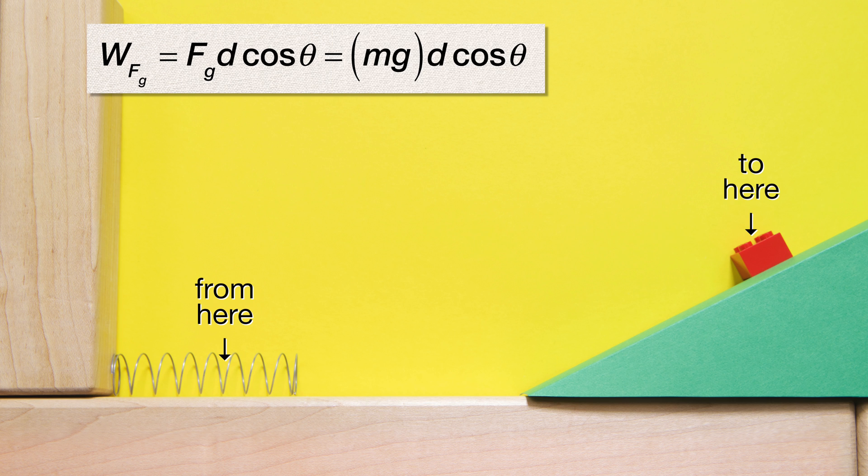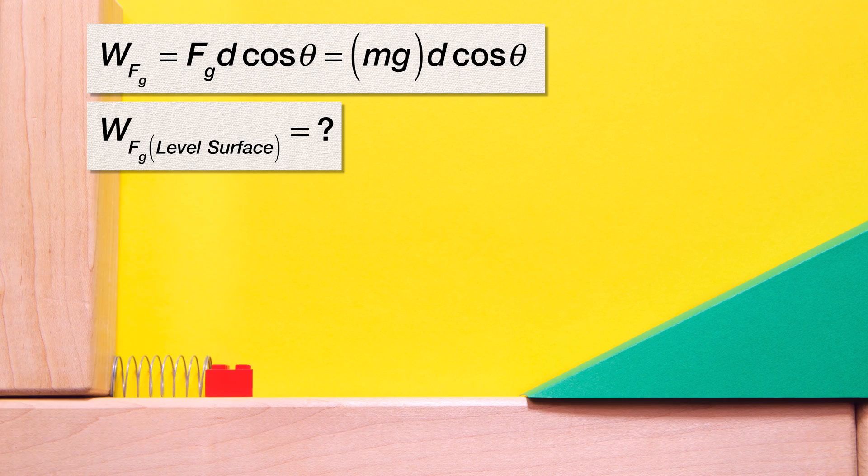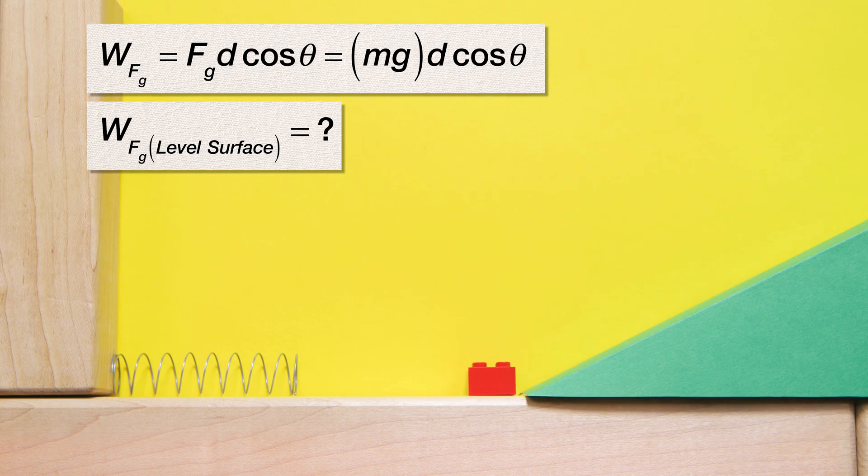The force of gravity equals mass times the acceleration due to gravity, so we can substitute that in for the force of gravity. The angle between the force of gravity and the displacement of the block is different on the level surface than it is on the incline, so we need to split the work done by the force of gravity into two equations. One on the level surface and one on the incline.